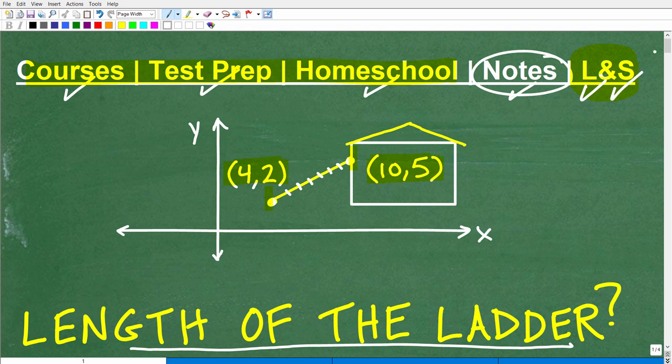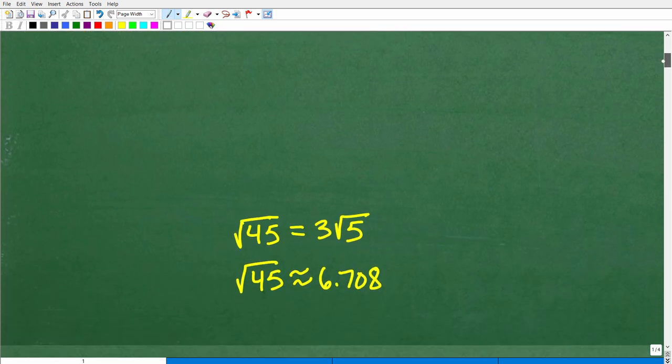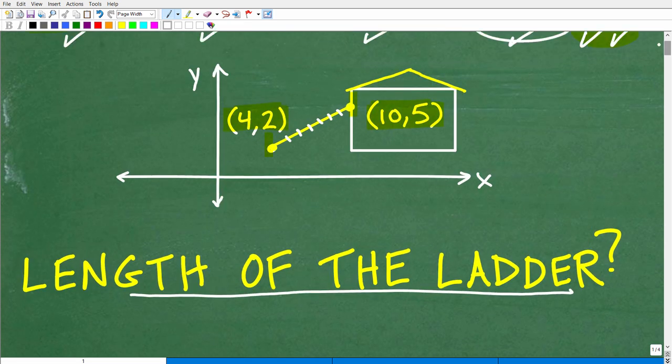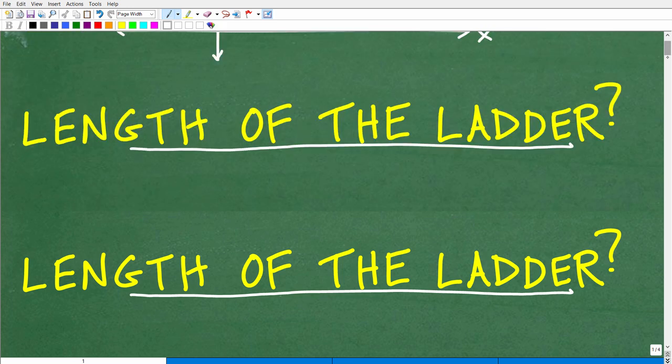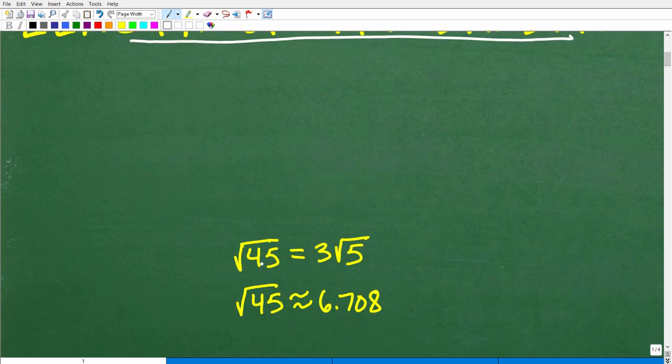Okay, so let me go ahead and show you the solution. And then we'll go ahead and get into actually how I got that answer. So what is the length of the ladder? Okay, so we're looking for this distance right here. What is that length? Well, here it is. It's the square root of 45.